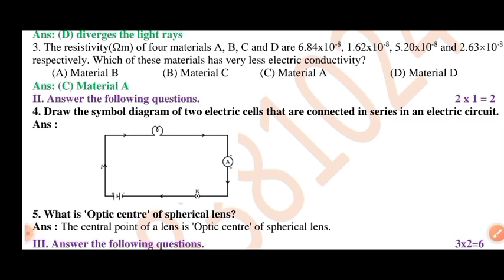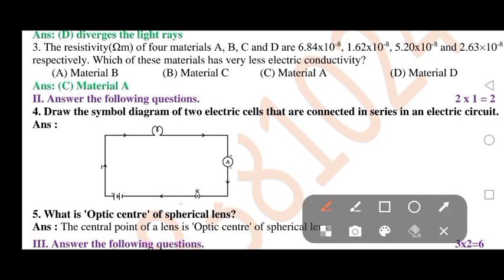The resistivity of four materials A, B, C and D are 6.84 into 10 raised to power of minus 8. This is the correct answer. The question is Material A.